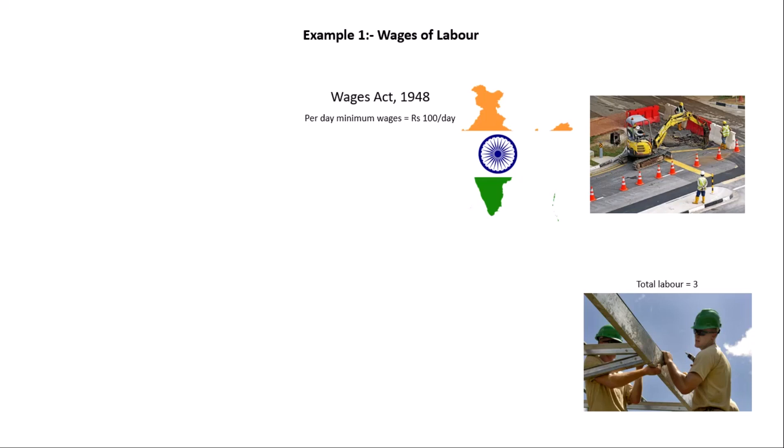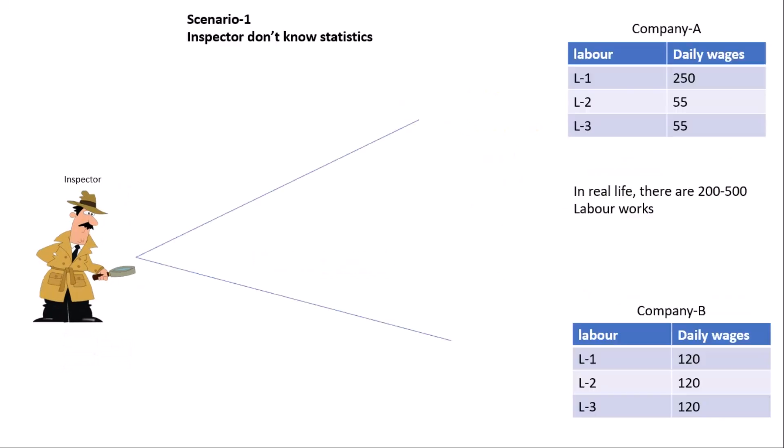This is the inspector. He is interested to know which company is doing fraud, which does not follow the rules mentioned in the Wages Act 1948. This is scenario number one, in which the inspector doesn't know statistics.